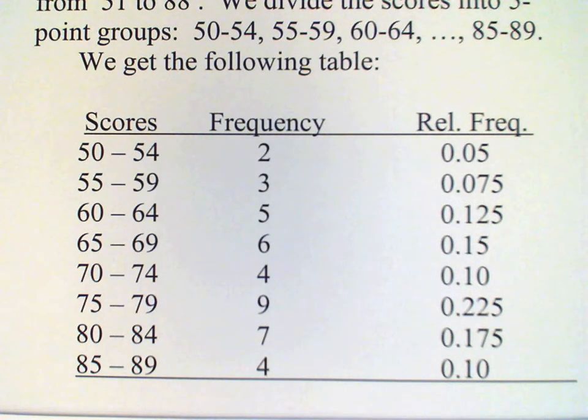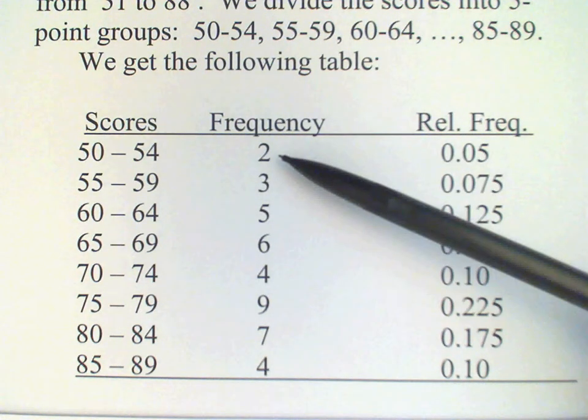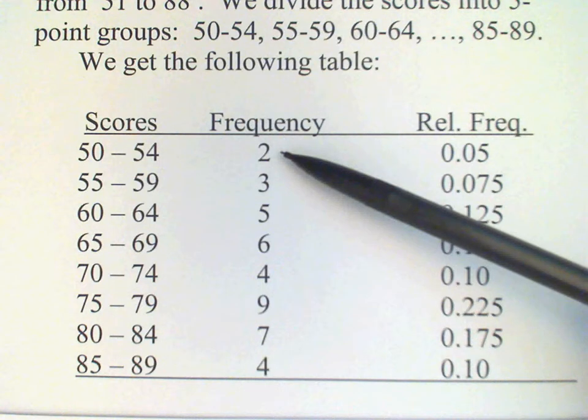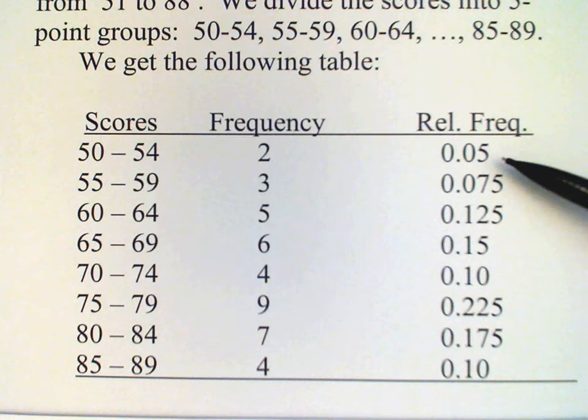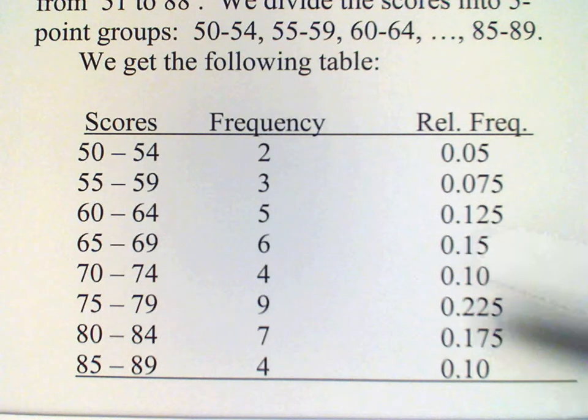And so we can calculate the relative frequency of each of the classes by dividing the frequency, in this case 2 for 50 to 54, by the total, which is 40. And so for that we would get 0.05 or 5%. We do that for each of the classes and get this frequency distribution.